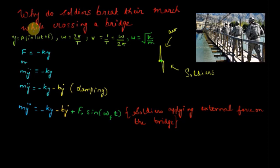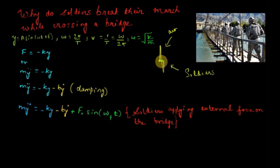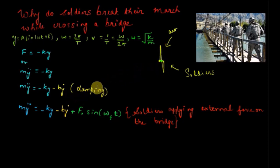Now let's get back to answering why soldiers break their march. So far we discussed a particle oscillating freely without any external resistance — in that case it maintains its amplitude and frequency throughout. However, in real life the particle faces resistance, which increases with the speed of the particle and acts to decelerate it. To model this resistance we add a term −bẏ to our equation, where b is the damping constant and ẏ is the velocity.